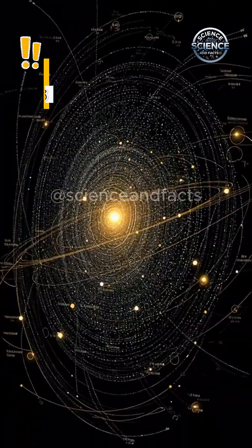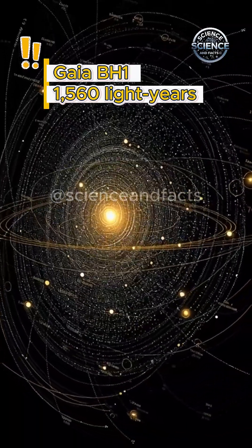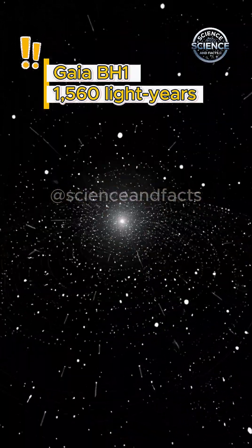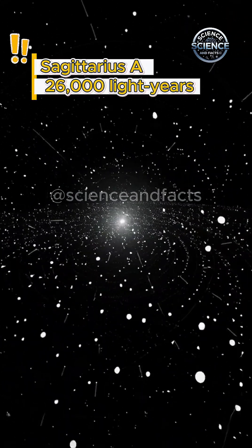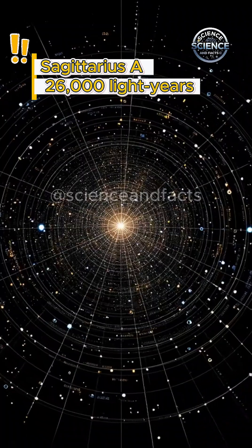Nearest Black Hole to Earth: Gaia BH1, 1,560 light years. Black Hole in our Galaxy Center: Sagittarius A, 26,000 light years.